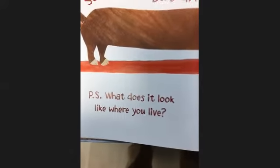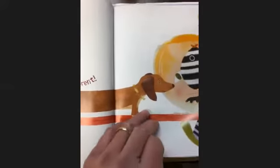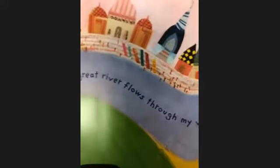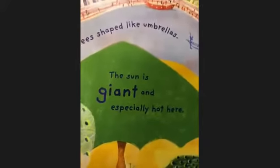Then Elliot asks, 'What does it look like where you live?' The letter goes back to India and Kailesh writes: 'A great river flows through my village, peacocks dance under trees shaped like umbrellas.' Look at all the peacocks in Kailesh's village and the nice buildings along the river — that would be a fun boat ride. He also says the sun is giant and especially hot there.